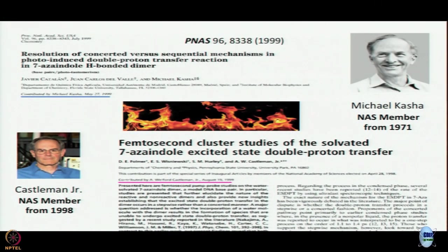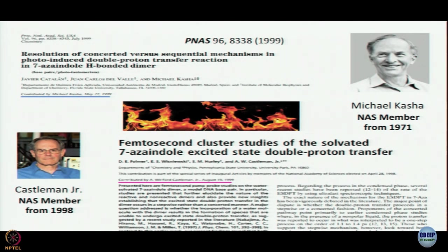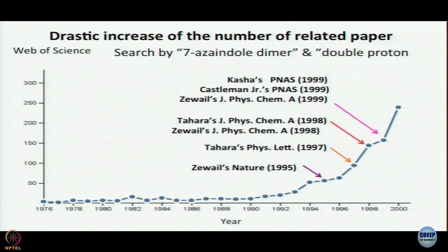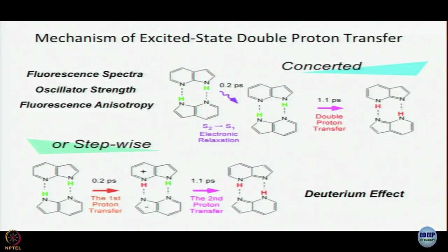This was immediately followed by a paper from Castleman, where he defended their position. So this was like a war of giants — Michael Kasha had been a Fellow of the National Academy of Sciences USA since 1971, and Castleman had just become a fellow at that time. It really got eyeballs. I usually do not show this in presentations, but in this case, to show the interest generated: the number of papers in related fields was essentially nothing until 1990, then slowly increased, and from around 1995 it just took off — most of this work was about this debate: is it concerted or is it stepwise?